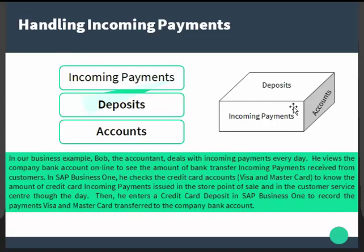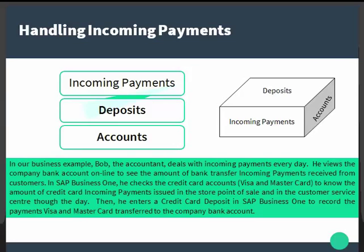Let us start with handling incoming payments. In the typical manual process, the customer pays their debts — that is, open AR invoices — according to agreed payment terms, which can be cash, installments, or net 30, depending on your business. In our business example, Bob the accountant deals with incoming payments every day. He views the company bank account online to see bank transfer incoming payments received, and checks credit card incoming payments issued at the store point of sale and customer service center. He then enters a credit card deposit in SAP Business One to record the payments transferred to the company bank account.